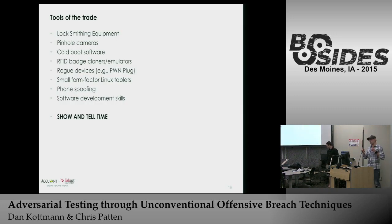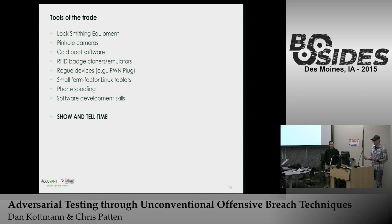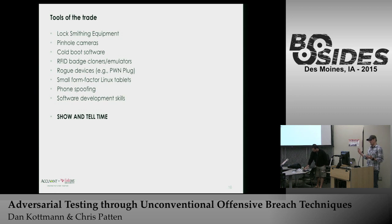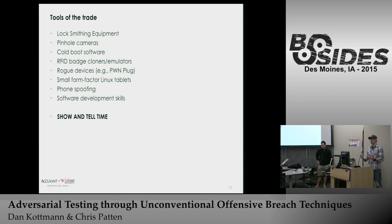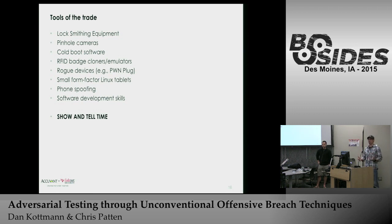Before the case studies, here are some tools of the trade — not the standardized tools you'd typically see on normal pen tests. We have locksmithing tools: lockpicks and bump keys to get past physical access controls. We run into situations where we need to bypass a door — an external perimeter door, internal perimeter, or internal door — to gain initial access and get a logical foothold in order to place a malicious device.